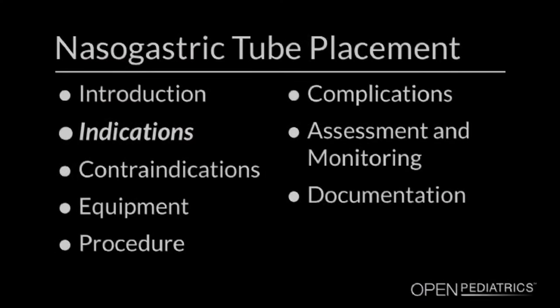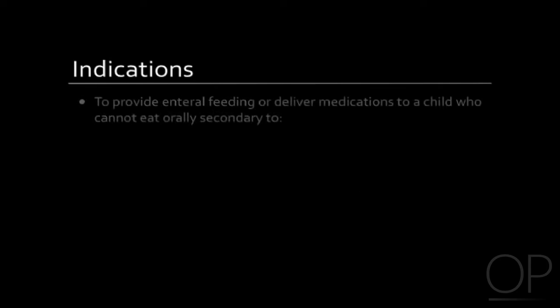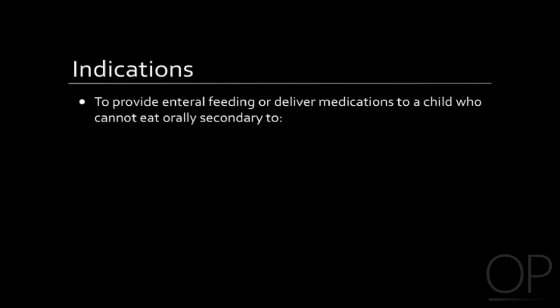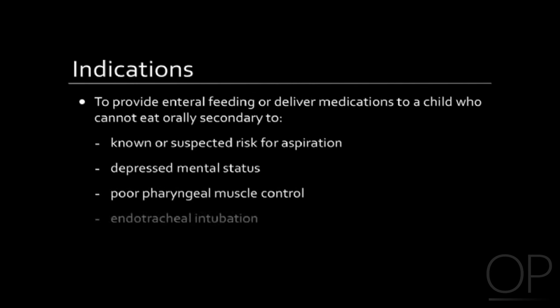I'm going to show you the different types of tubes that you could use and then actually how to do the procedure. The first indication is to provide enteral feeding or deliver medications to a child who cannot eat orally secondary to known or suspected risk for aspiration, depressed mental status, headaches, poor pharyngeal muscle control, endotracheal intubation, or poor appetite.